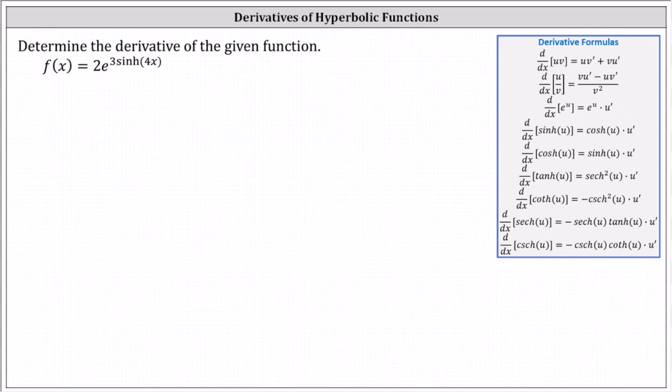This indicates u equals the exponent of three hyperbolic sine of four x, and now we need to determine u prime, which is the derivative of three hyperbolic sine four x. This also requires a chain rule where the inner function u is equal to four x.